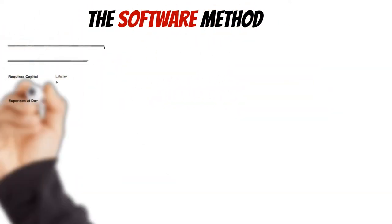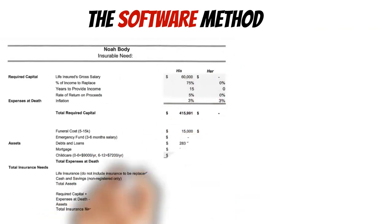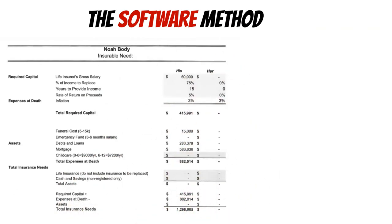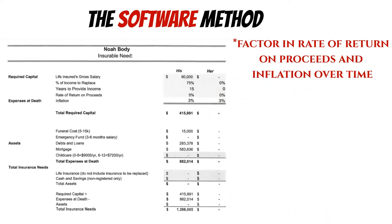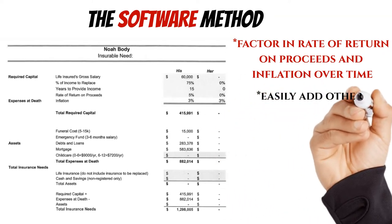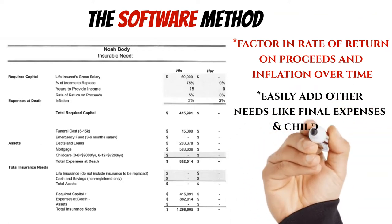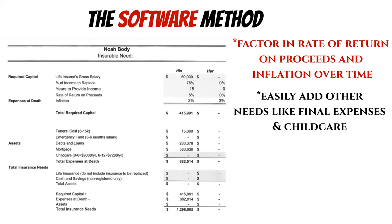The last method is the software method, which is usually the best one to utilize if you can. It's going to be a lot more accurate when using a spreadsheet or a software program found online. Some great things about it: it can factor in the rate of return you might get when you invest proceeds from the death benefit; it factors in inflation over a period of time, which is really important because over the course of 15–20 years things end up costing a lot more; and you can easily add requirements for additional debts and other items like child care and final expenses, which a lot of the time get left out.